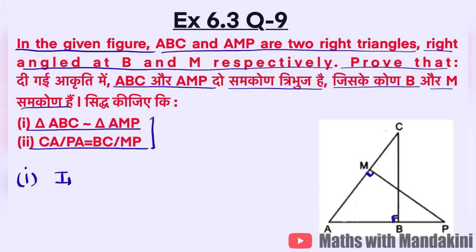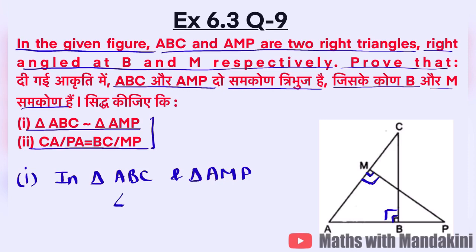In triangle ABC and triangle AMP, we can clearly see that angle B and angle M are right angles, both equal to 90 degrees. So angle B, which is part of triangle ABC, and angle M, which is part of triangle AMP — these two are equal because both are 90 degrees.